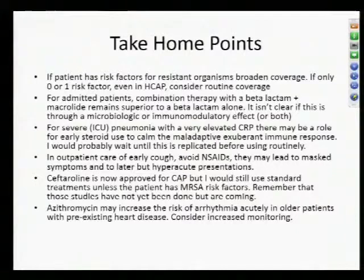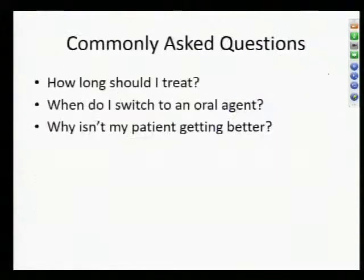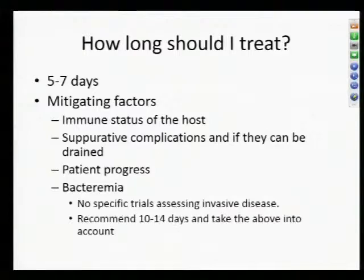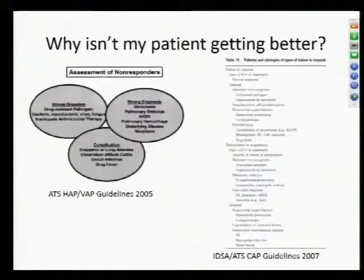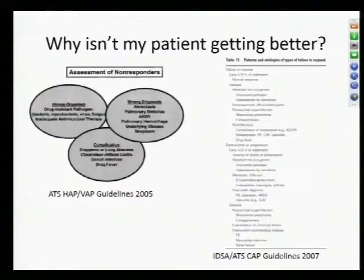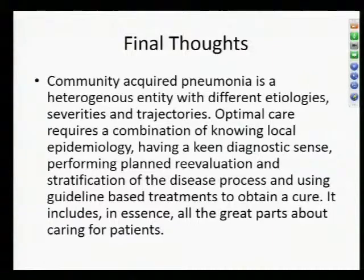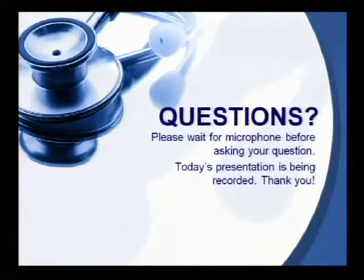Treatment take-home points: standard duration is five to seven days. The prednisone data is not yet strong enough. Ceftaroline is available if you're concerned about MRSA risk factors. Increase monitoring for azithromycin in high-cardiac-risk patients. If patients aren't improving, think: wrong bug, wrong drug, or sanctuary site — pus that needs drainage. Failure to improve at 72 hours is somewhat expected, but worsening or no improvement after 72 hours warrants reassessment. Thank you.